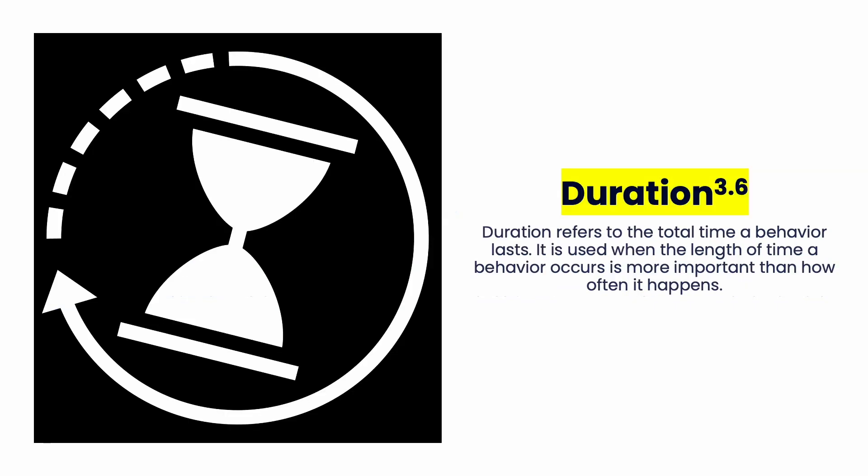Our second type is duration. Duration refers to the total time a behavior lasts — you start the stopwatch when the behavior starts and stop it when it stops. This is for longer-lasting behaviors where the length of time is more meaningful than the count. For example, if you were sitting in a meeting and someone said a kindergartner has a tantrum about once a week — that sounds kind of manageable.